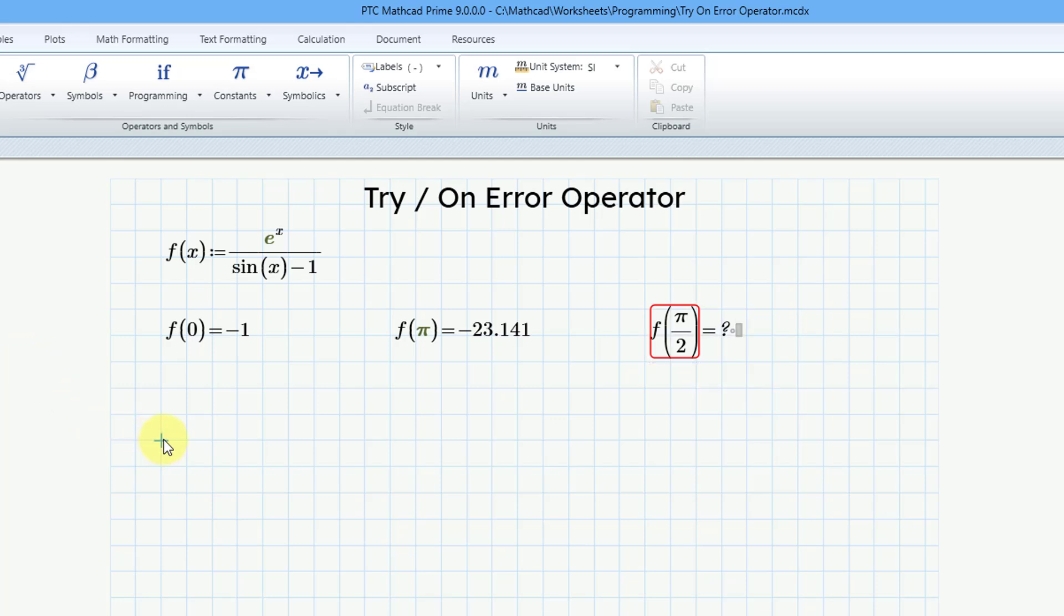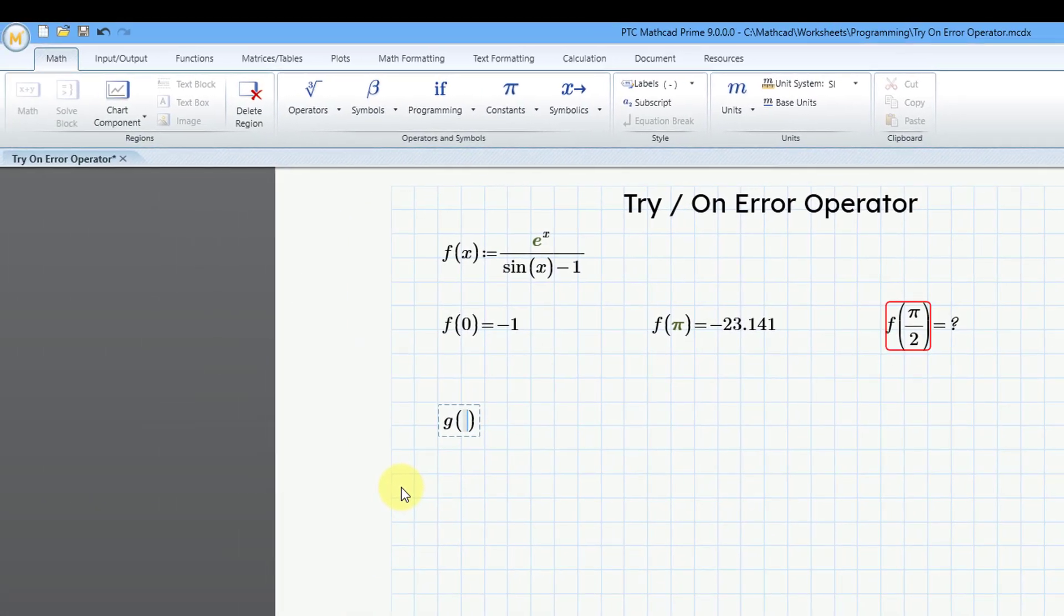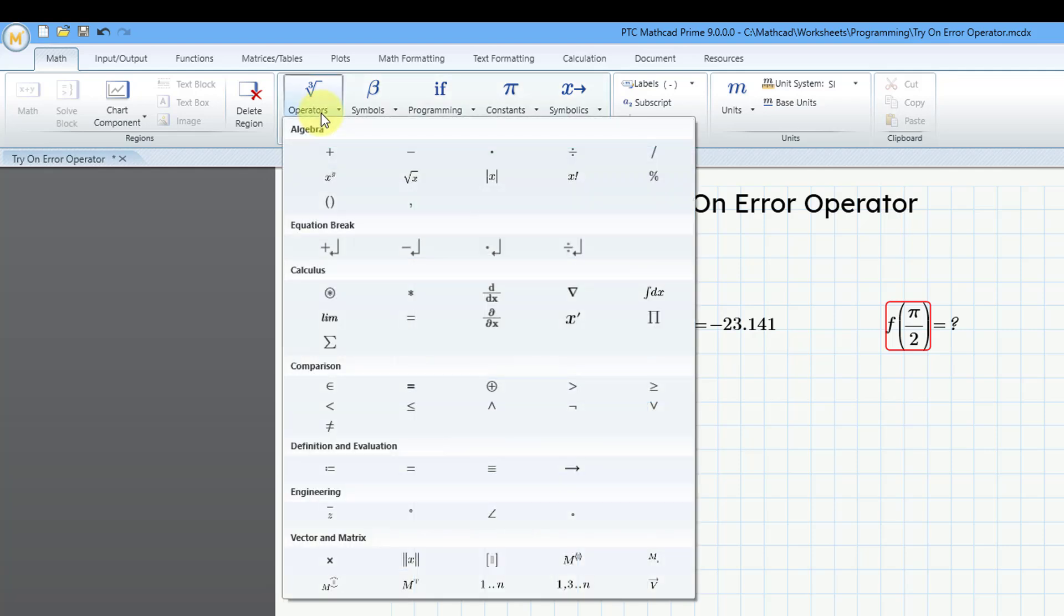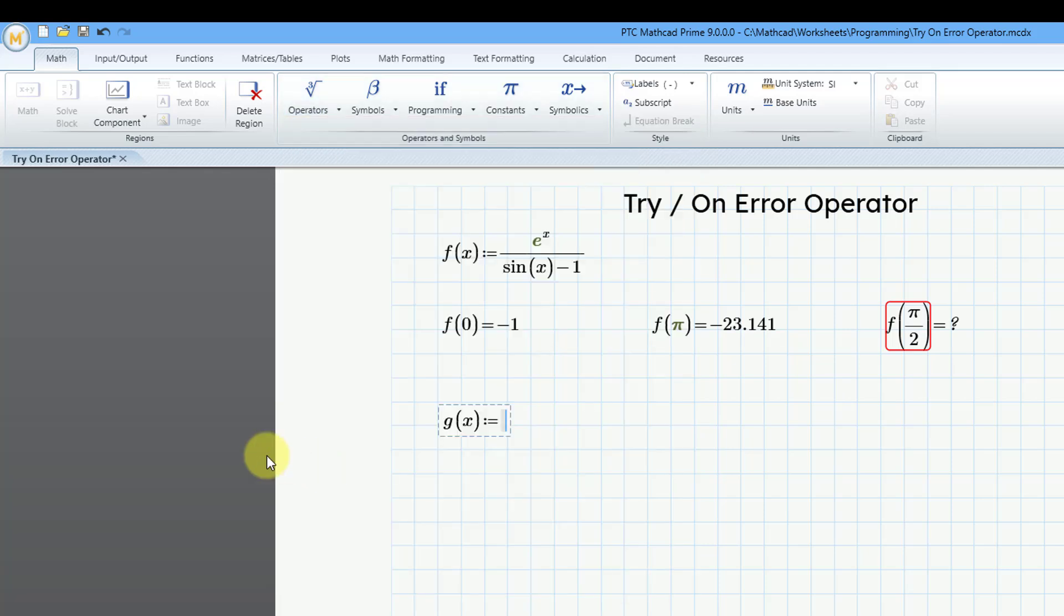I'm going to create a new function. Let me put my cursor over here. Let's do g as a function of x. Then I will use the definition operator in case you don't know where that is. If you go to the operators drop down, it is right here under definition and evaluation. And again, it is the keyboard shortcut of the colon key.